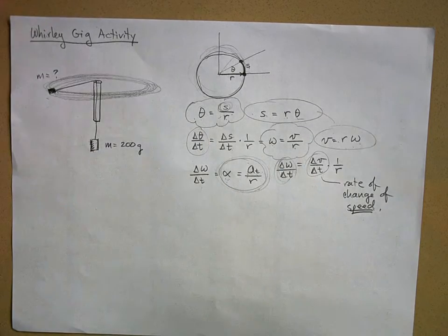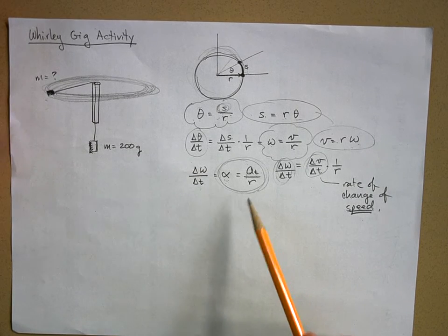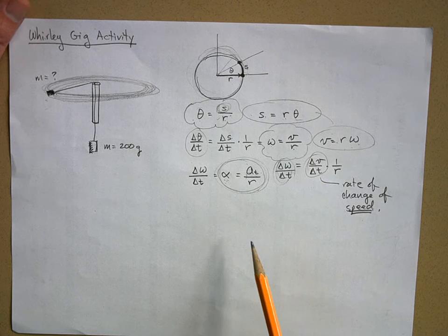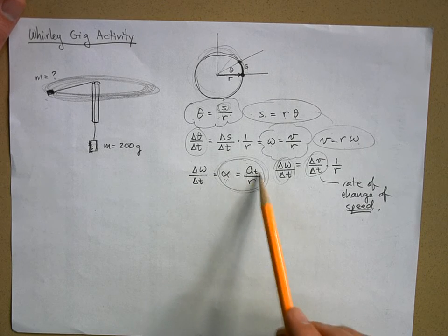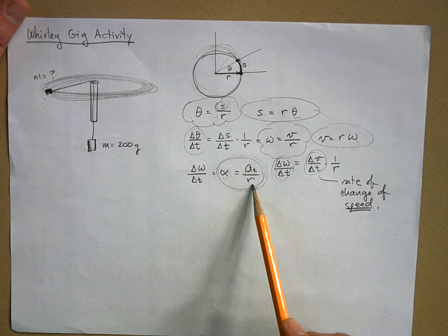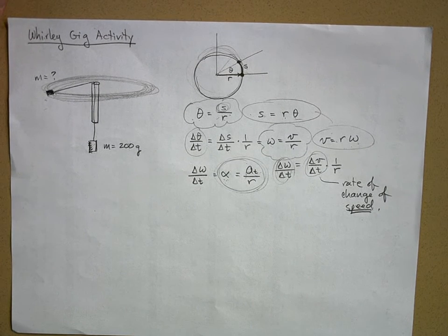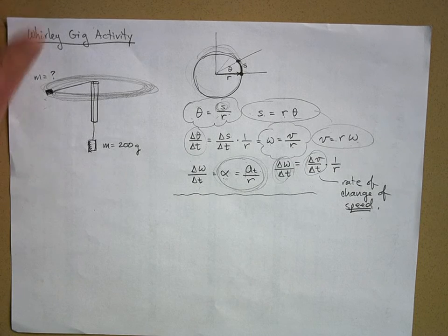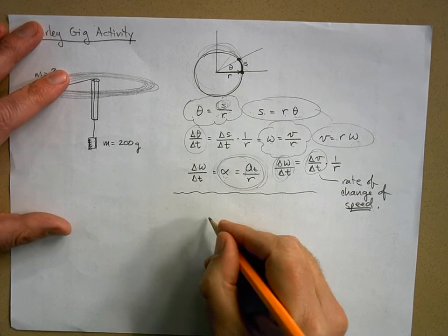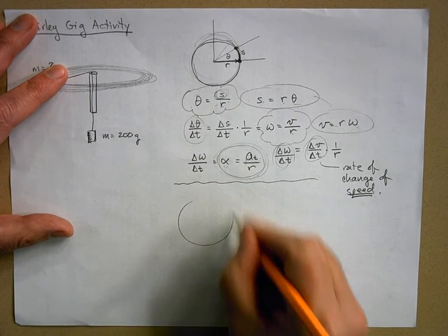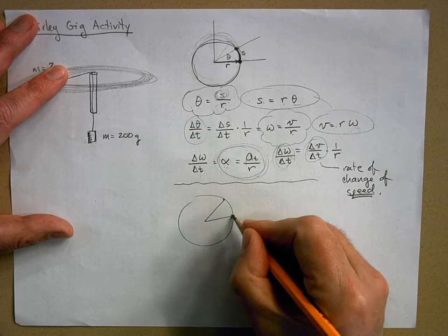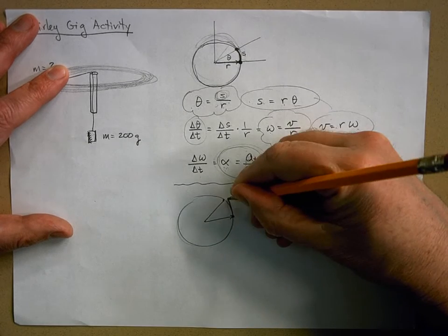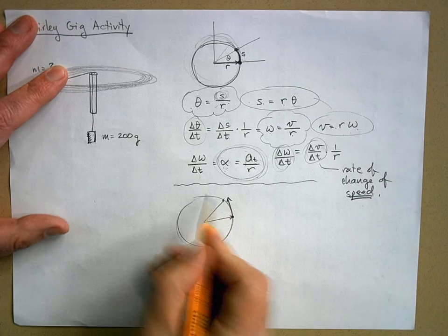With constant angular acceleration you can use kinematic equations, though we won't review those right now. This tangential acceleration only defines the rate of change of speed. We also talked about the acceleration you experience when you change the direction of your velocity vector — like moving in a circle.